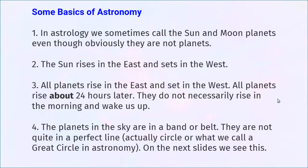Number two: the sun rises in the east. No matter where you live — Japan, Canada, wherever — the sun rises in the east and sets in the west. Number three: it's not just the sun that rises in the east. All planets rise in the east — Mercury, Venus, Neptune — all planets rise in the east and set in the west. And all of them take about 24 hours from the time they rise to rise again. When the planets rise, it's not necessarily in the morning; it could be any time of day, and you don't really notice it because it doesn't light up the whole sky.